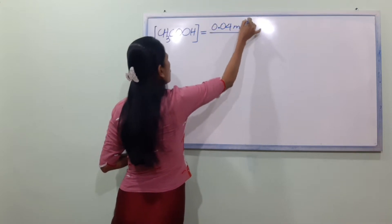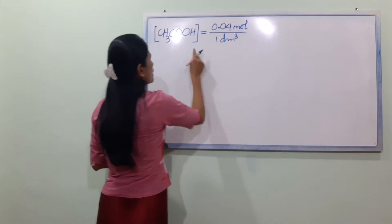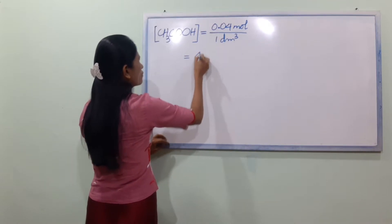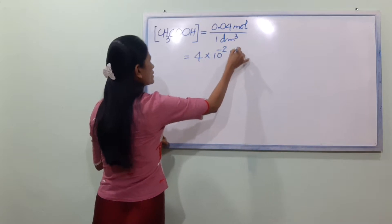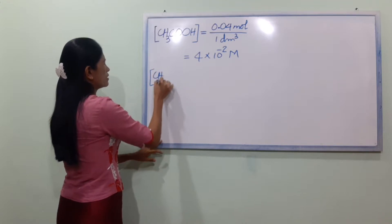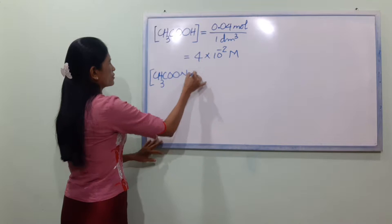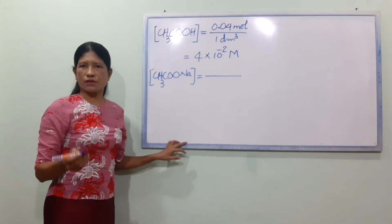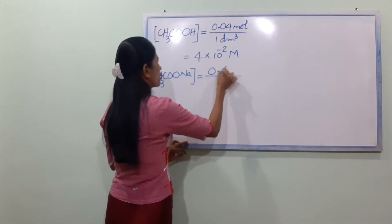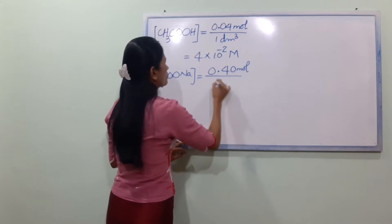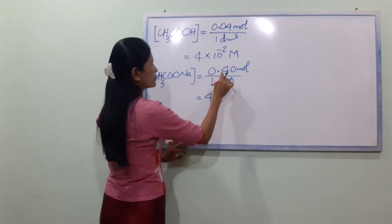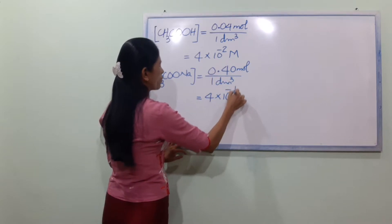So, we have 4 × 10 power minus 2 mol per dm³ — the whole polarity. Here we go. Salt concentration: CH₃COONa concentration. You will be able to use sodium ethanoate, 0.40 mol per dm³. That's the polarity — 4 into the polarity, minus 0.40.